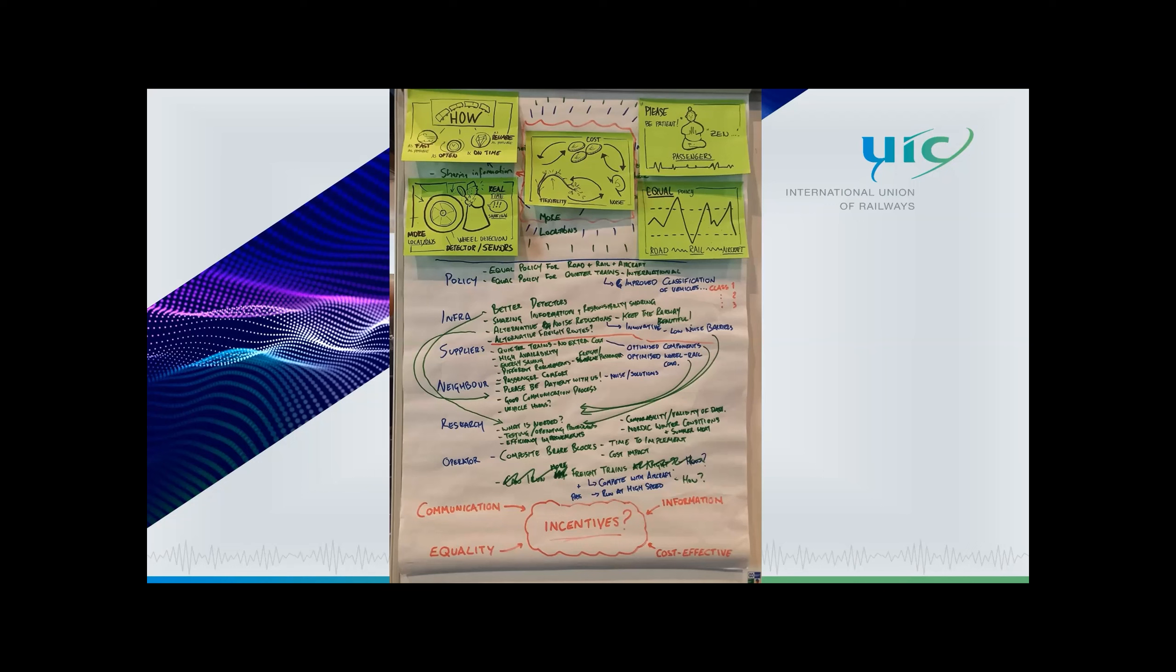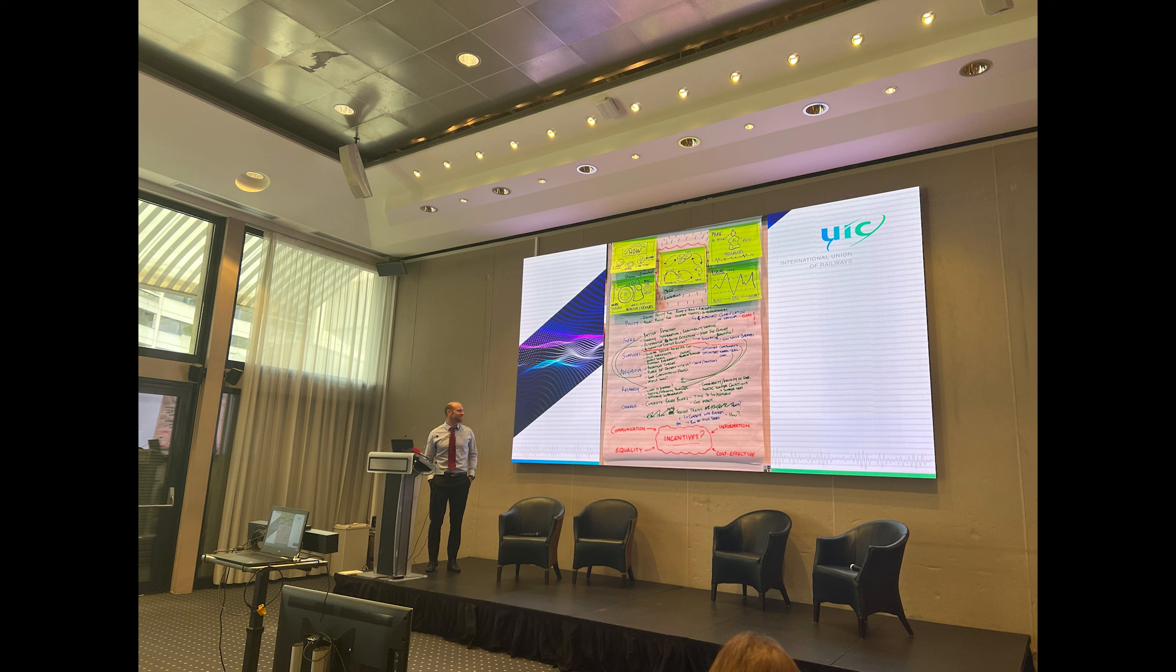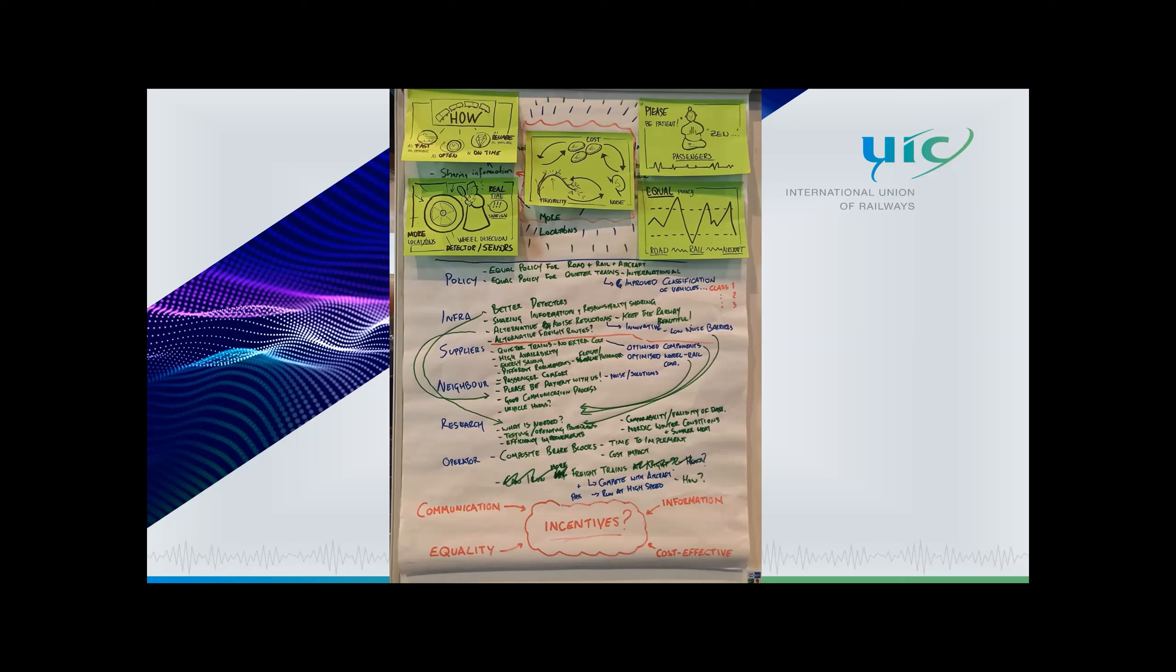And then from there we tried to understand how we impact on the other groups that have been here today and vice versa. And one of the key things that we came up with is in the middle on the wonderfully drawn green diagram, which is this constant trade between cost and noise. And then a third element, which we have called flexibility, which is where there is noise implications and we have to operate outside of what maybe the normal condition is. So we might approve something for the cost versus noise conversation, but then in the operational environment things change and we have to adapt to this.